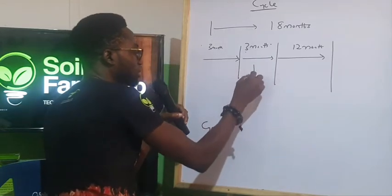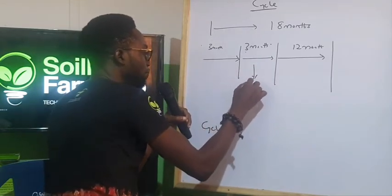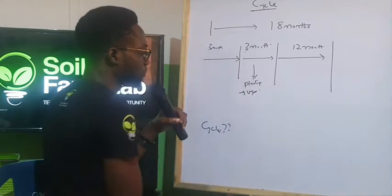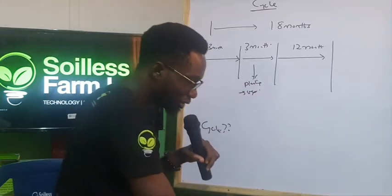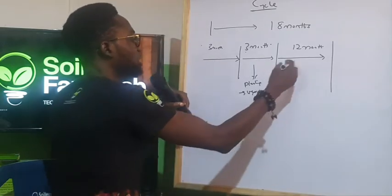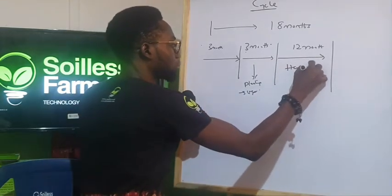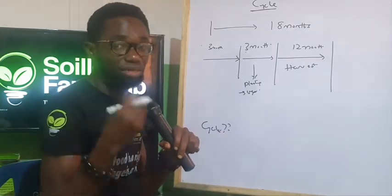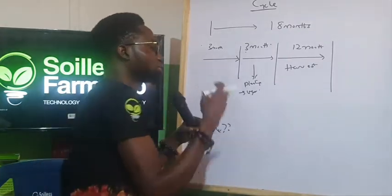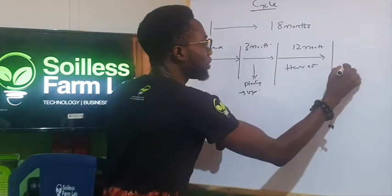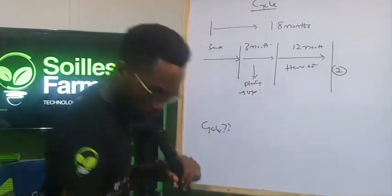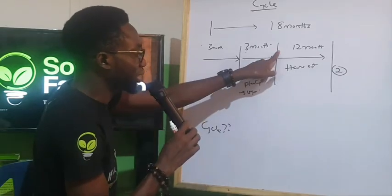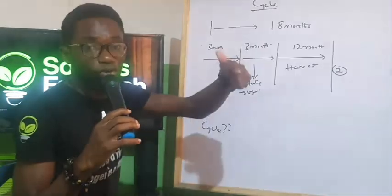Now this 3-month period at the middle is the planting to vegetative phase where we plant the seedling to vegetative. This 12-month period is harvest. Now the habanero we are going to be giving to or planting on all our farms are the types that you can harvest for up to 2 years. From the day we planted, when you start harvesting, you will keep harvesting for up to 2 years.